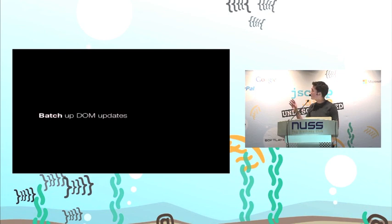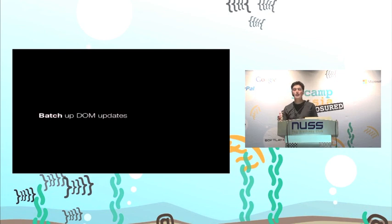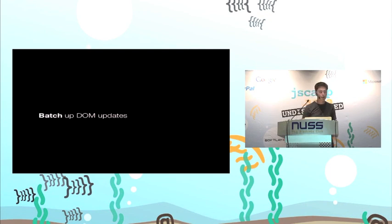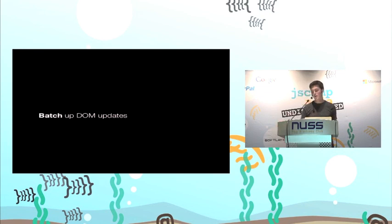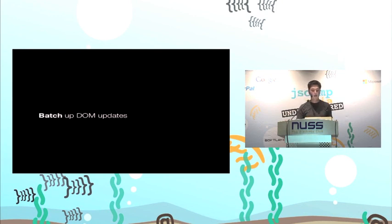Another tip for view rendering: batch up DOM updates. The slowest thing you can do when view rendering is communicate with the DOM, so do it as little as possible. You can hide elements, manipulate them, and show them to make sure there's only one paint — or you can manipulate DOM trees that aren't attached to the main body. Basically, make it fast by communicating with the DOM as little as possible.